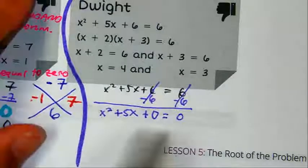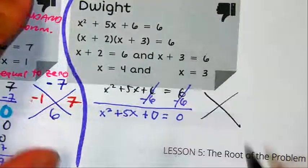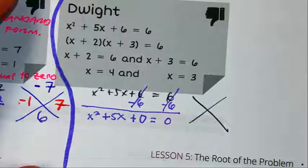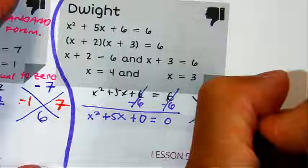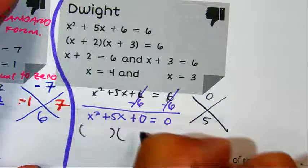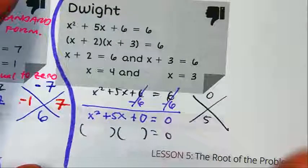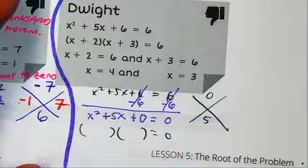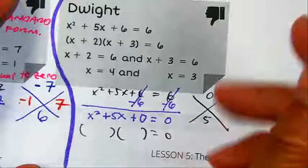Amy, if we use the X in the box, what's A times C? A times C is 0. Correct? B value? 5. Okay, it's kind of weird. Two numbers that multiply to be 0, but those same two numbers add to be 5. 5 and 0.